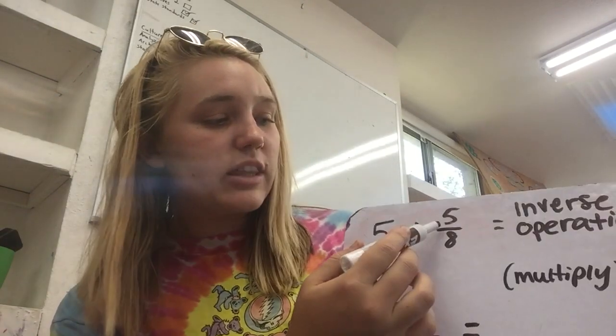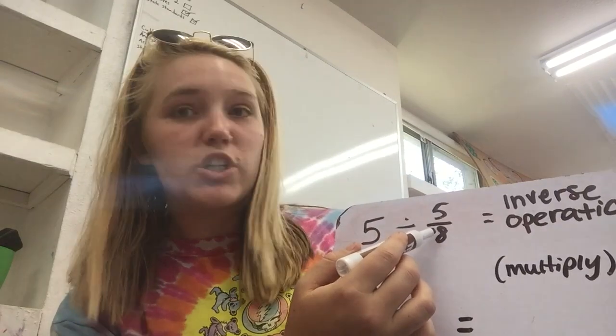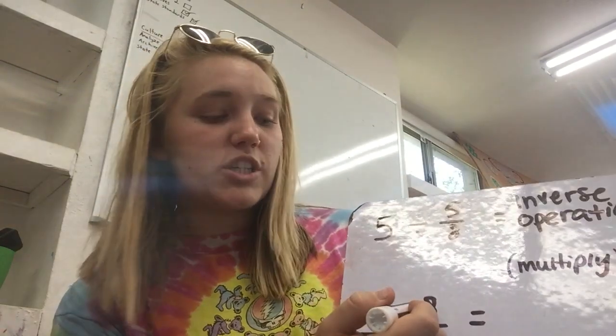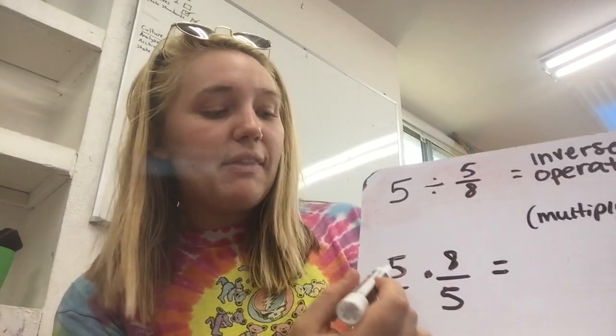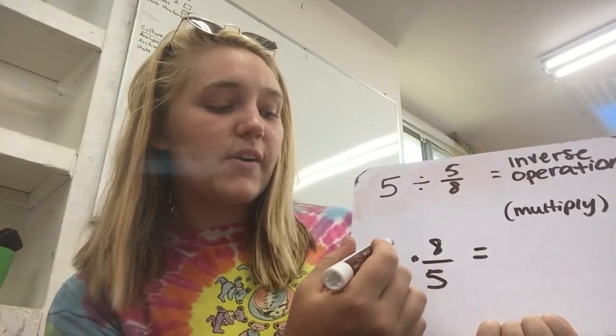Then you take the reciprocal of five-eighths, which just means to flip it, which is eight over five. Then you just multiply straight across. It's very simple.